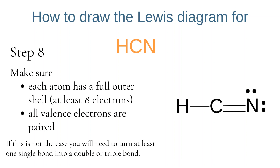When we look at the Lewis diagram now, nitrogen still has 8 electrons found in pairs. But carbon now has 3 bonds, giving it 6 electrons — still not a full outer shell. Therefore, we take another lone pair from nitrogen and form a triple bond between carbon and nitrogen. Now hydrogen has 2 electrons and is stable. Nitrogen has 8 electrons — 6 as bonding pairs in the triple bond and 2 as lone pairs. Carbon now has 4 bonds: a triple bond and a single bond, giving it 8 electrons and making it finally stable. This is the correct Lewis diagram.